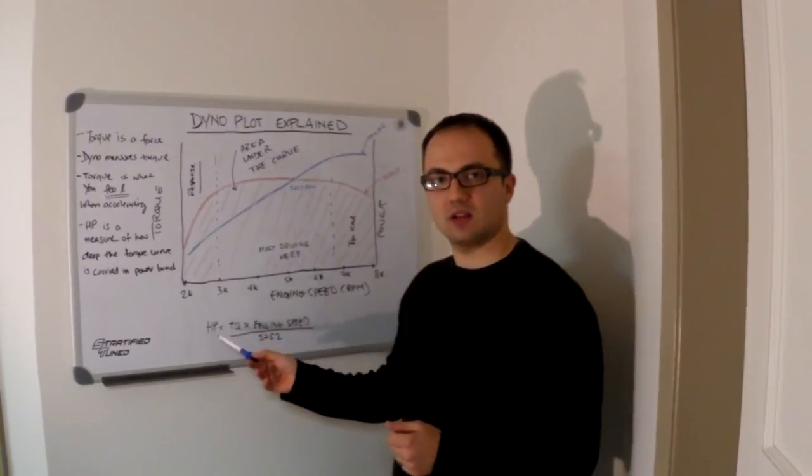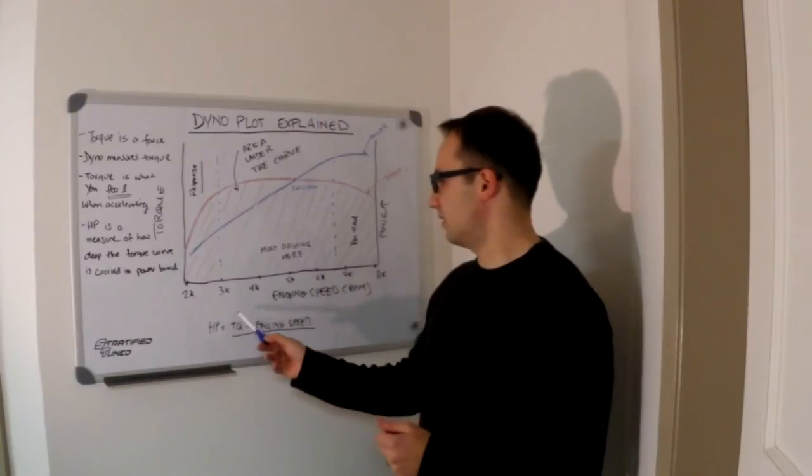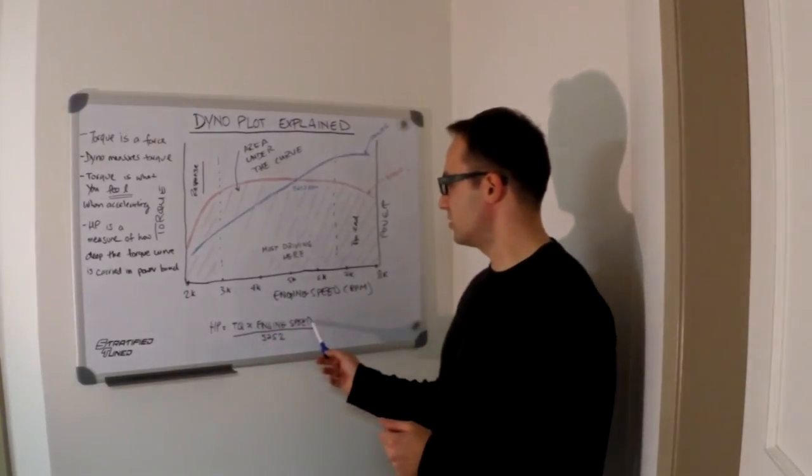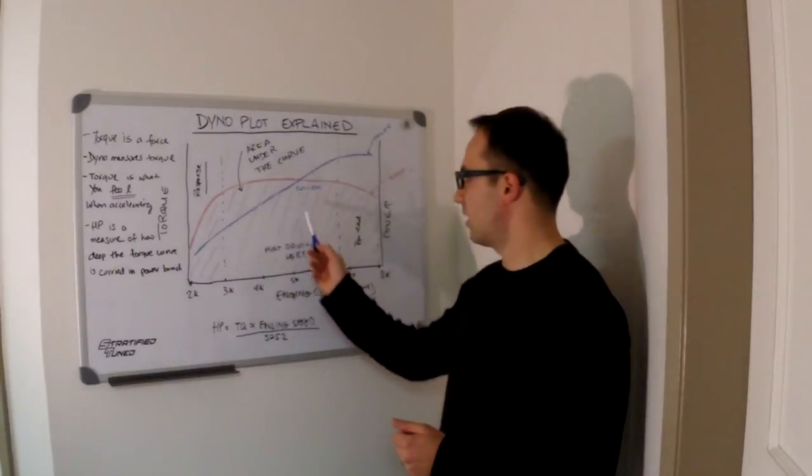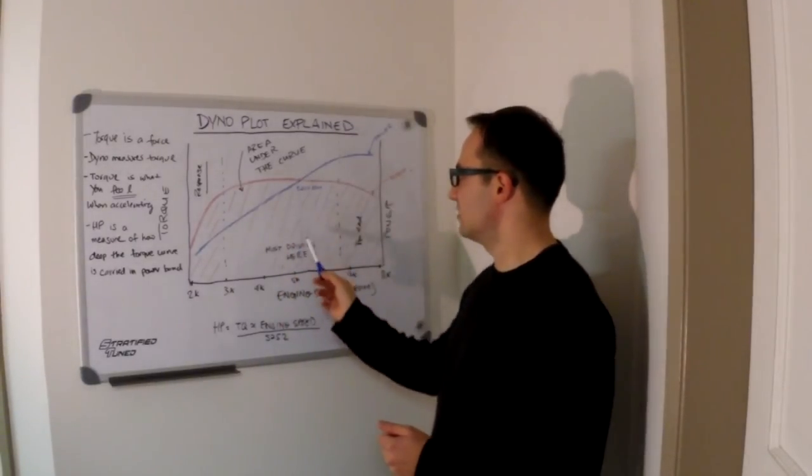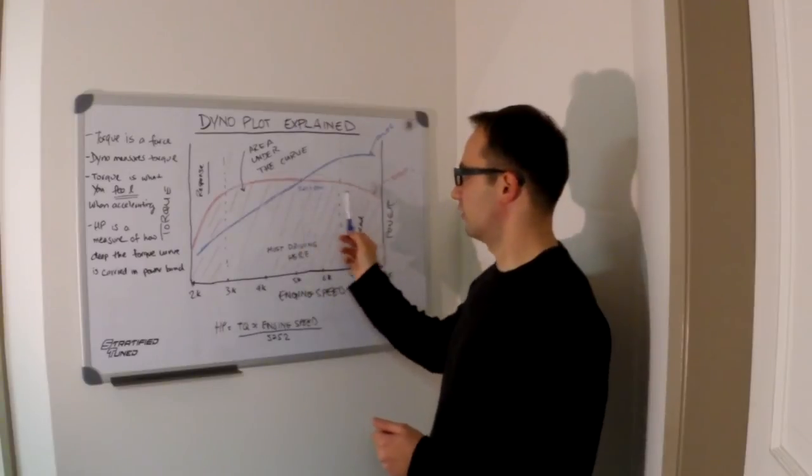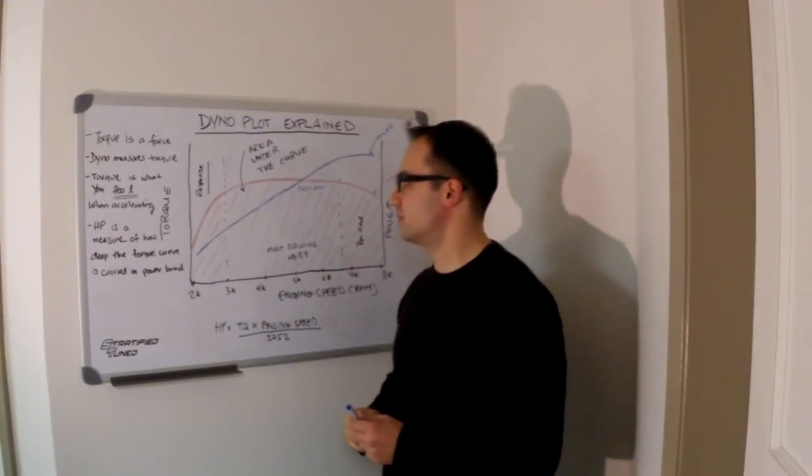The horsepower, when it's calculated, is calculated using the formula of torque multiplied by engine speed and divided by 5252, and this is why on all the dyno plots, you see that the horsepower curve and the torque curves cross at 5252.